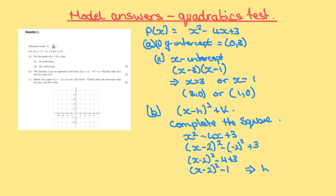So we get x minus 2 all squared minus 1. Therefore h is 2 and k equals minus 1. Part C, sketch the graph: we know the x-intercepts are (1, 0) and (3, 0), and the vertex is (2, minus 1), so we can draw the graph. Clearly label the x-intercepts: (3, 0) and (1, 0), the y-intercept (0, 3), and the vertex (2, minus 1).